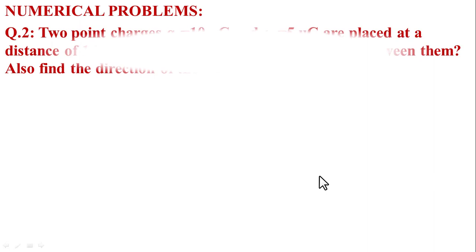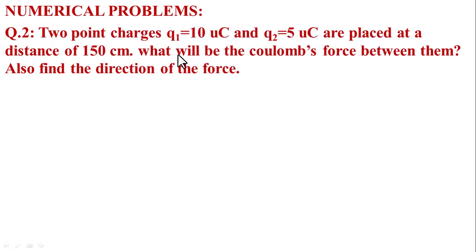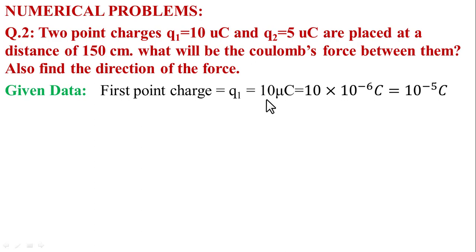Numerical problem, question number 2. Given statement: 2 point charges Q1 = 10 microcoulombs and Q2 = 5 microcoulombs are placed at a distance of 150 cm. What will be the Coulomb force between them? Also find the direction of force. Given data: Q1 = 10 × 10⁻⁶ C = 10⁻⁵ C.